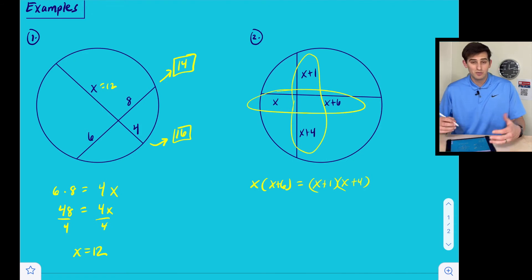Okay, so here we got to remember a little bit of algebra. So on the left side, we're just going to distribute this X. So we get X squared plus six X. And now on the right side, we have two binomials, so we can FOIL this. So X times X is X squared, then we would have X times four, four X, one times X is X, so that's going to end up being five X, and four times one is four.